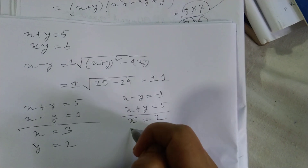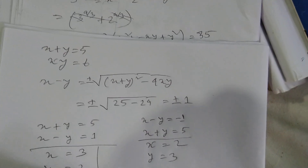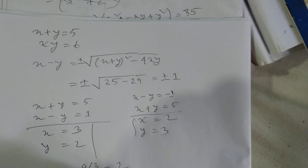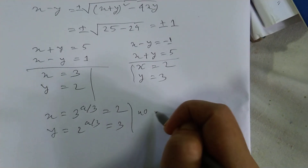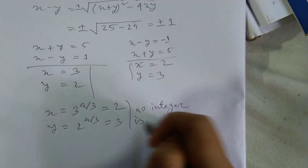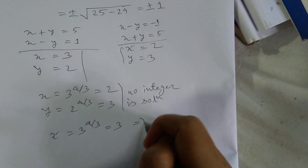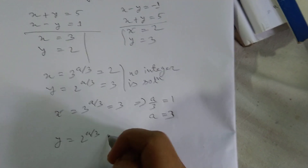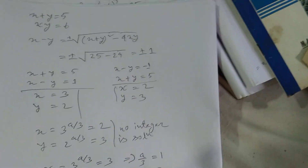Checking: x = 3^(a/3) = 2 and y = 2^(a/3) = 3 gives no integer solution. But x = 3^(a/3) = 3 gives a/3 = 1, so a = 3. And y = 2^(a/3) = 2 gives a/3 = 1, so a = 3. My answer is a = 3.